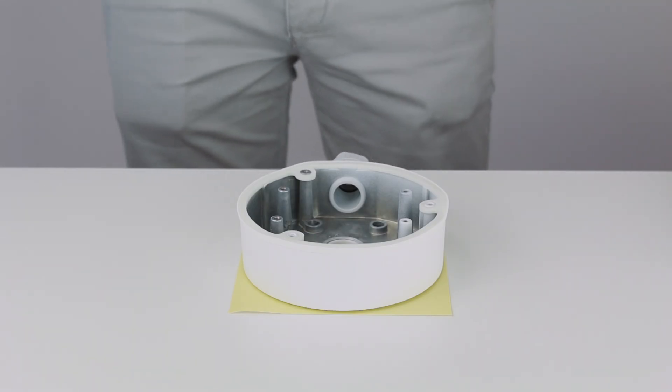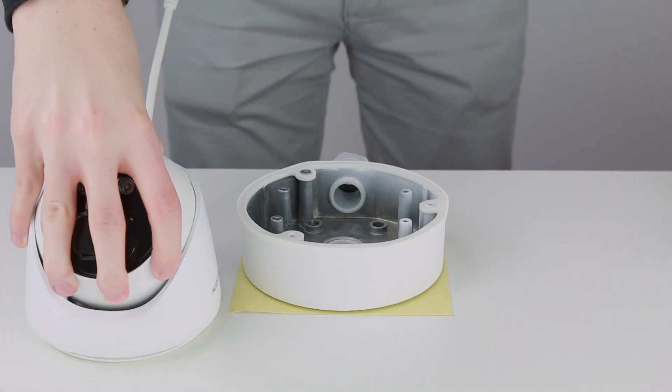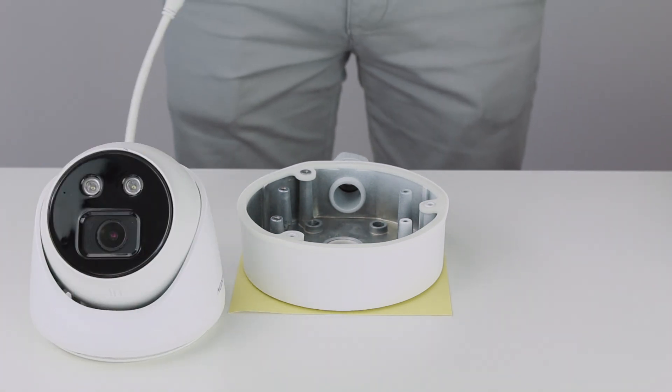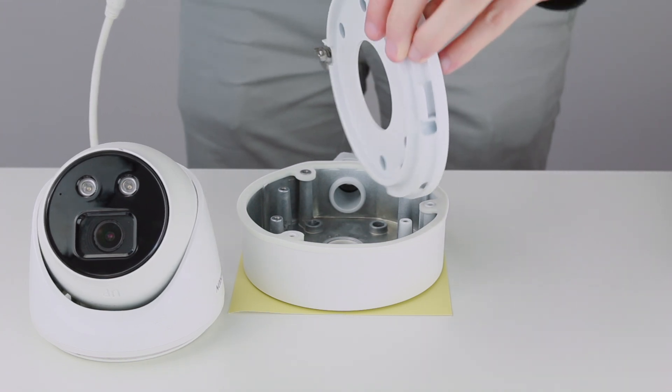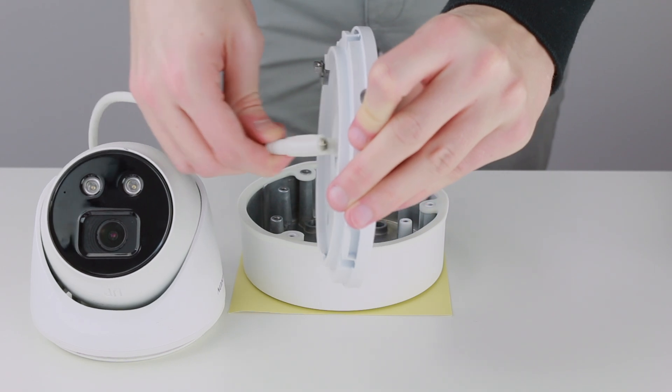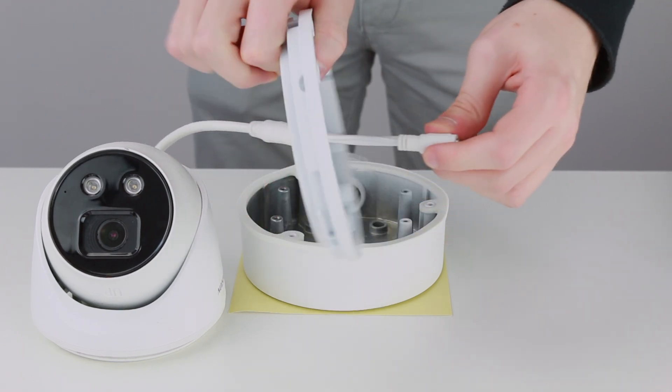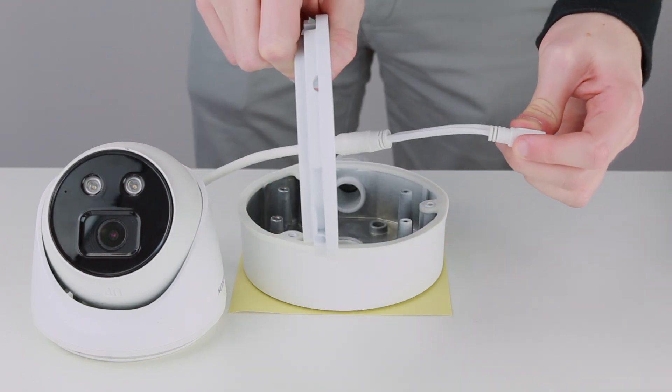Now you are ready to offer the base plate up to the junction box which should already be mounted in your desired location. But before offering up make sure the turret's fly lead is passed through the hole in the centre of the base plate because you will want to make the RJ45 connection and possibly the separate 12 volt connection inside the box before screwing the base plate onto the junction box.